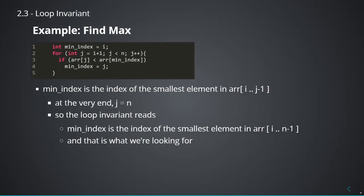Finally, at the very end — because the loop invariant is maintained all the time, at the very end it will still also be true. At the very end, j is equal to n, so the loop invariant will read: min_index is the index of the smallest element in r from i up to n minus 1. And that is exactly what we're looking for. So the loop invariant is telling me that min_index is the answer — it is the index of the smallest element in the array from i up to n minus 1. This is just showing that the inner loop actually does work.